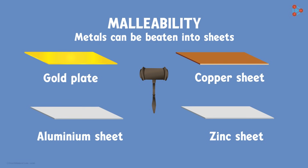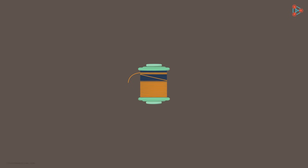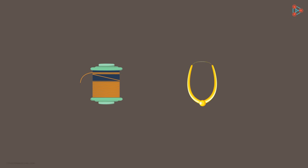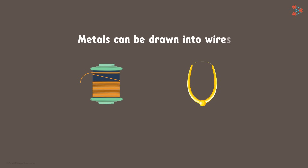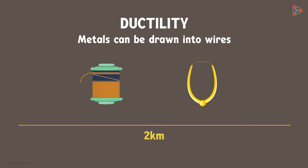Do you know another important property of metals? Have you ever seen copper wires or thin gold wires used to make jewellery? Metals by nature can also be drawn into wires. This property is called ductility — the ability of metals to be drawn into wires. Here is an amazing fact: a single gram of gold can be drawn into a 2 km long wire. There are some more interesting properties of metals which we will learn in our next lesson.